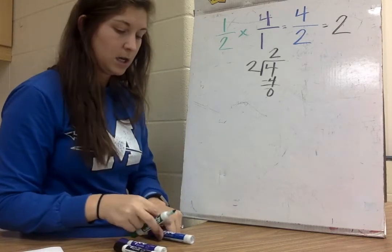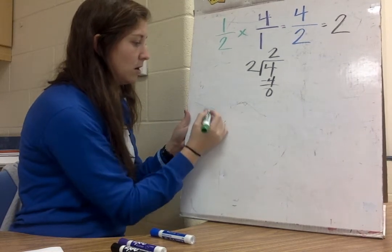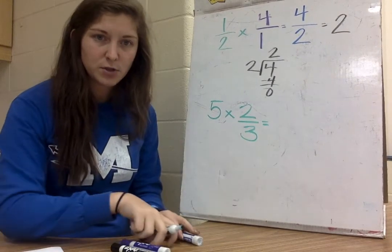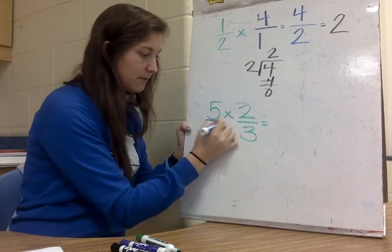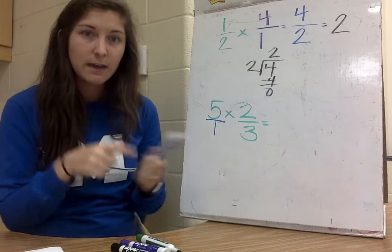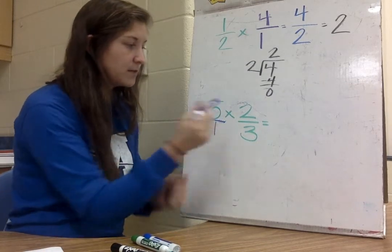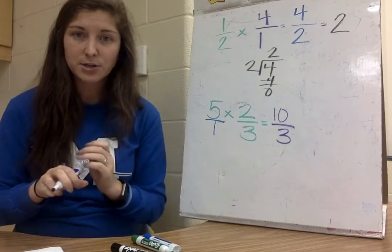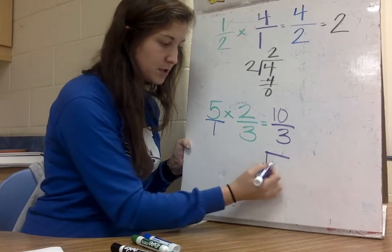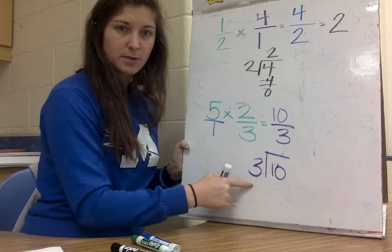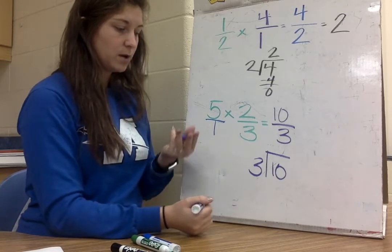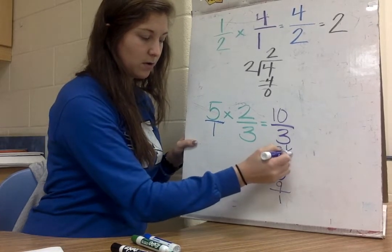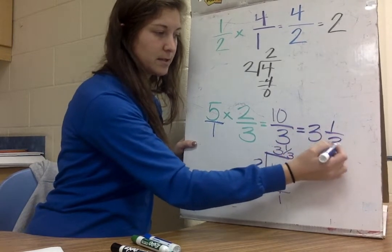Let's try one more: 5 times 2 thirds. Again, I have to make that 5 into a fraction by writing a fraction bar and putting a 1 underneath it. Then I multiply straight across: 5 times 2 is 10, and 1 times 3 is 3. So I end up with an improper fraction — 10 thirds. I can solve that using division: put 10 on the inside and 3 on the outside. 3 can only go into 10 three times because that's 9, and 10 minus 9 is 1. So I have 3 and 1 third as my mixed number answer.